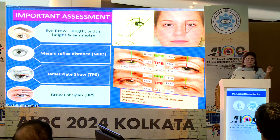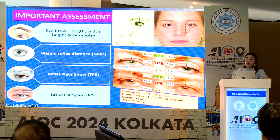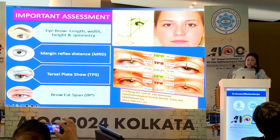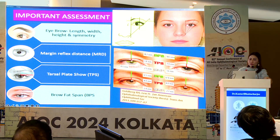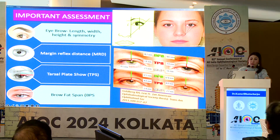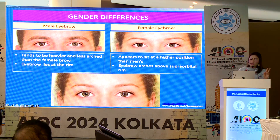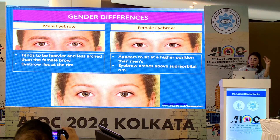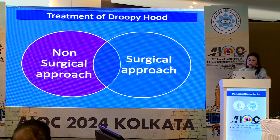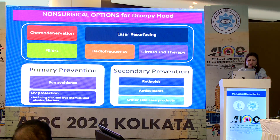A beautiful eyebrow is assessed as follows: a vertical line from the medial end of the eyebrow should touch the ala of the nose; a tangential line should touch the lateral canthus and lateral part of the eyebrow; and the highest point lies at the level of the lateral limbus. You should know about tarsal plate show and brow fat span. Male eyebrows are heavier and sit at the level of the supraorbital rim, while female eyebrows are positioned much higher above it.